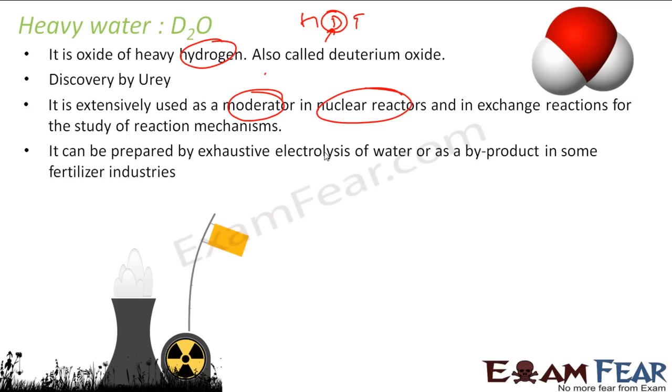And it is prepared by prolonged hydrolysis or electrolysis of water. And it is also produced by some byproducts in some fertilizer industries. So generally it is prepared by prolonged electrolysis of water.